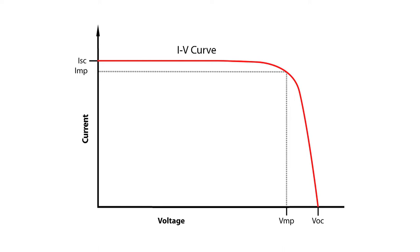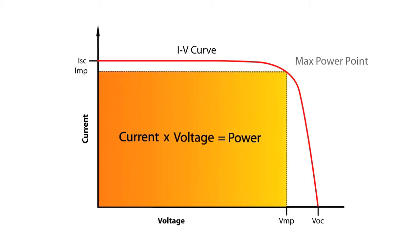The IV curve for a properly operating string is shown here. The height of the plateau varies with irradiance. The open circuit voltage, where current drops to zero, varies with cell temperature. Power is the product of current and voltage, thus maximum power is achieved at the knee of the IV curve.